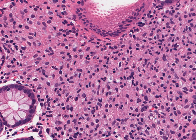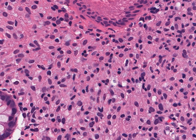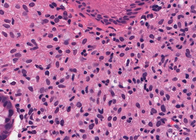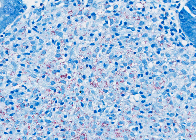The histologic appearance can resemble Whipple's disease, with sheets of granular macrophages infiltrating the lamina propria. Large numbers of rods are seen using the AFB stain.